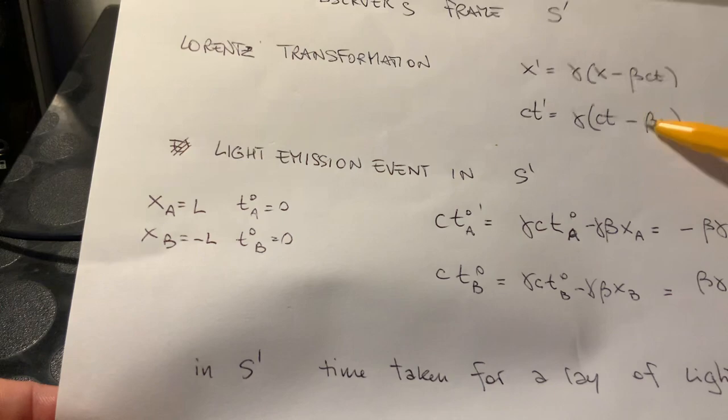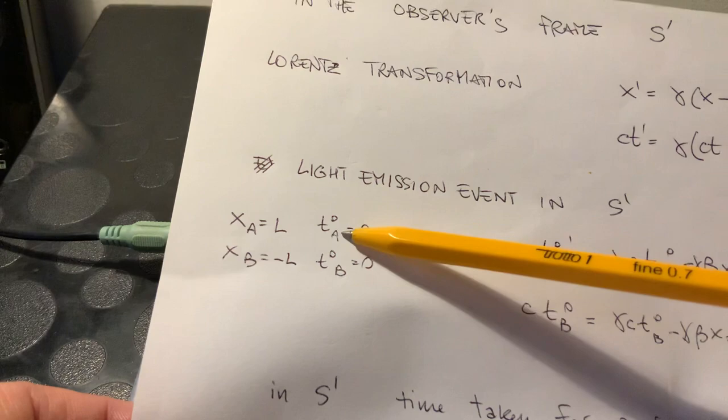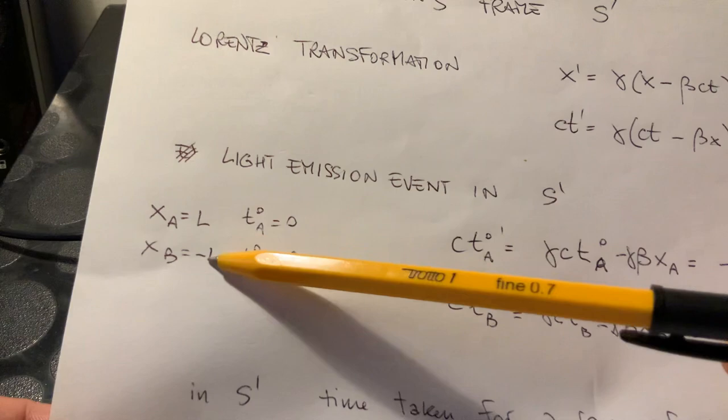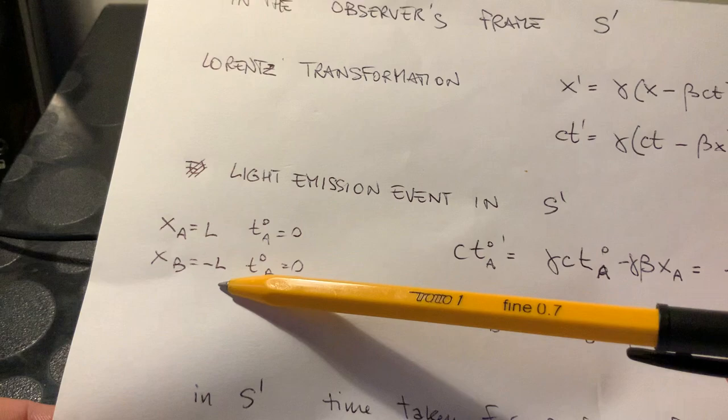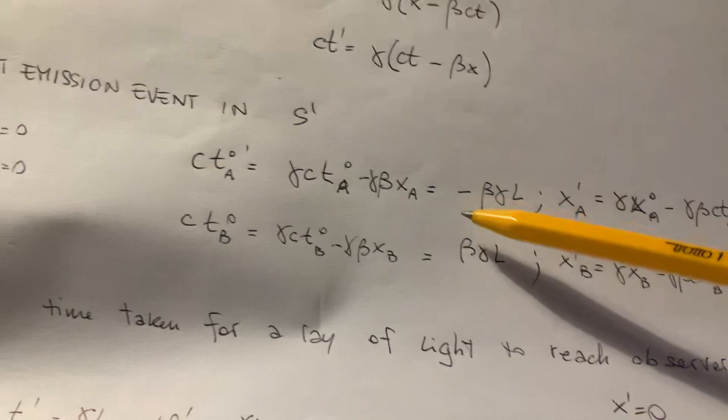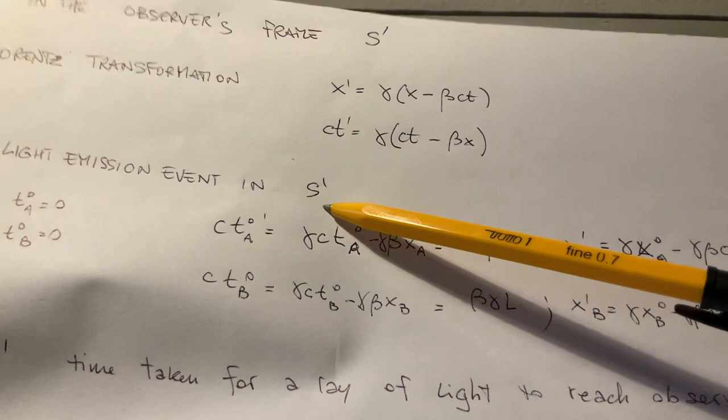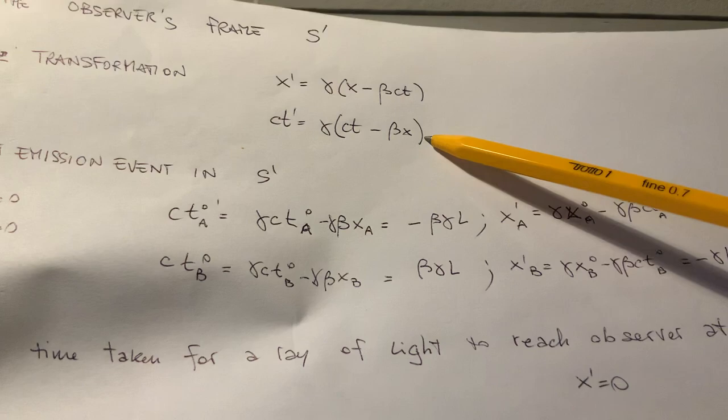And in this event, the light emission event, which happened for beacon A at time T zero A was zero, T zero B was zero. But the emission positions were different. The position A was at x equal L, and position B was at x equal minus L. So you plug this into the transformation law, and you get that the time of emission of pulse from A in the S prime frame, which is the moving frame, is not zero. It is, according to this law, you plug it in, and you get that the time is minus beta gamma L, which is a negative time, right?